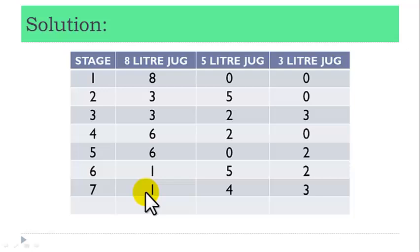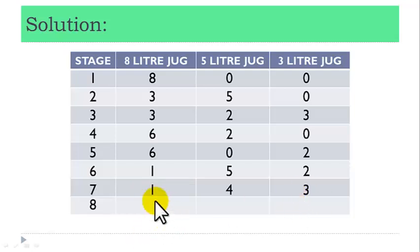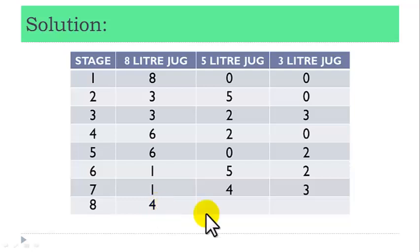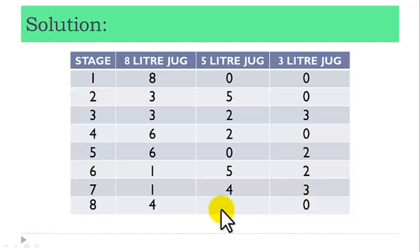Finally, in stage 8: turn the fluid from the 3-liter jug into the 8-liter jug to obtain 4-liter fluid in the 8-liter jug. The 3-liter jug now remains empty, and we still have 4-liter fluid in the 5-liter jug.